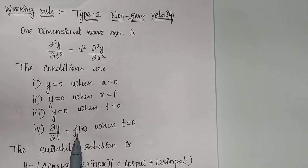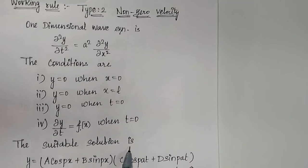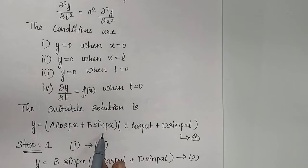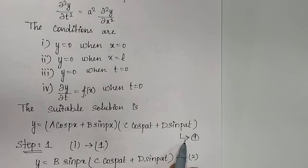You should not write f(x) during the exam. You have to write what is mentioned in your problem: ∂y/∂t = f(x). The suitable solution — which is common for both zero velocity and non-zero velocity for the one-dimensional wave equation — is: y = (A cos px + B sin px)(C cos pat + D sin pat), which is equation 1.